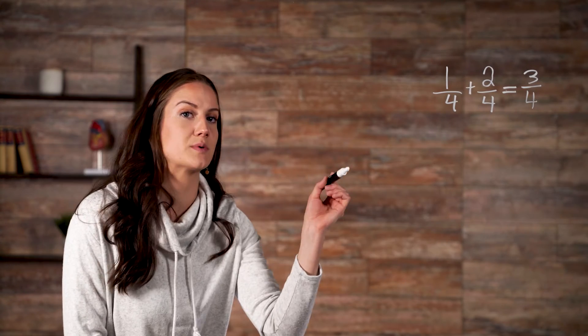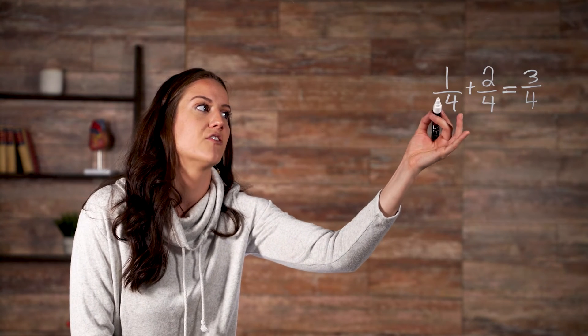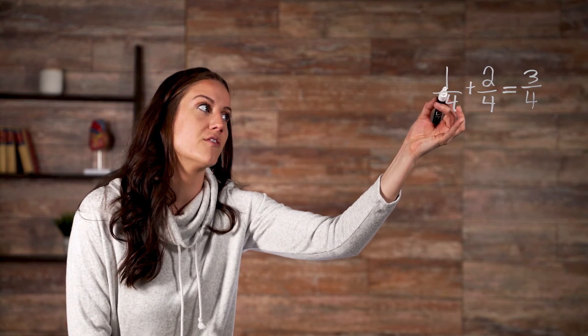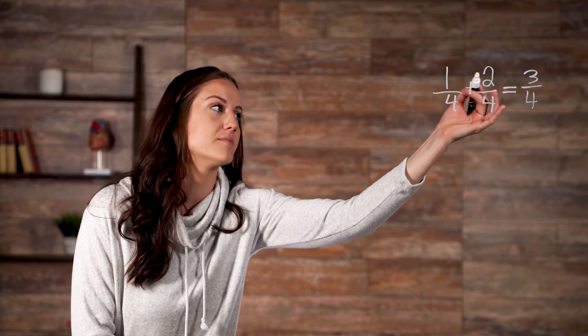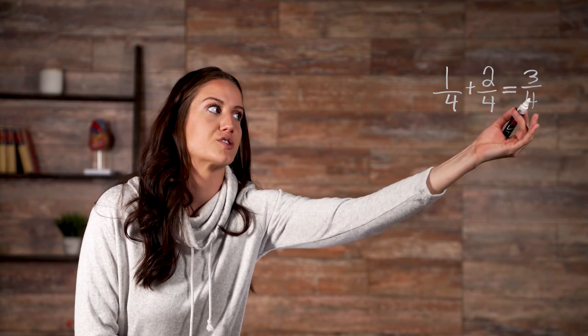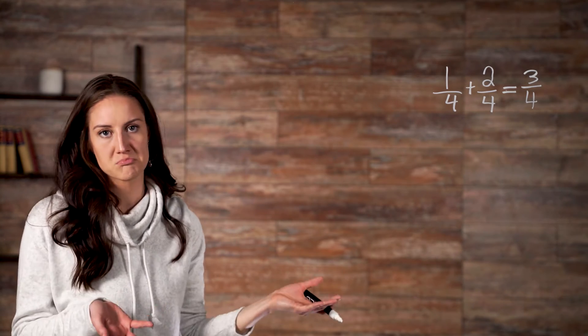So, notice what we did to get three-fourths. All we had to do was add, from our first fraction, the one from our numerator, and from our second fraction, the two from our numerator. Add them together to get three, and we just bring over our four from the denominator. Simple.